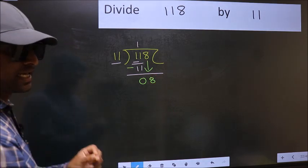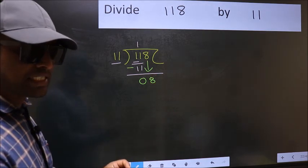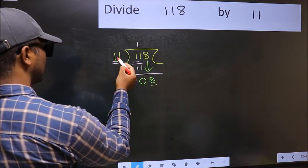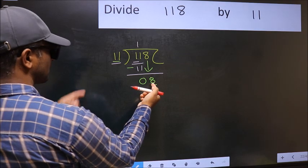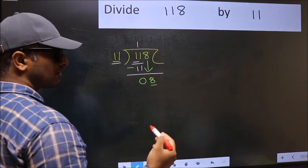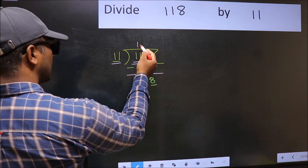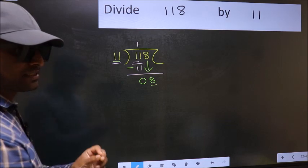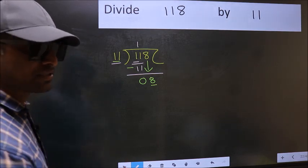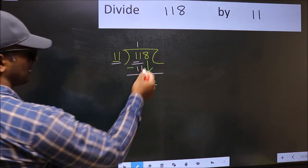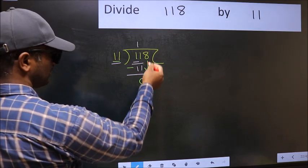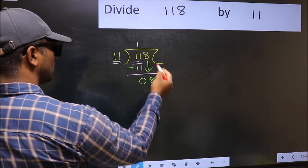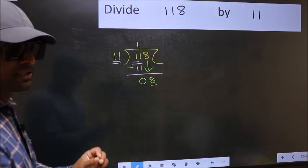After this step, the mistake happens. Here we have 8 and here 11. 8 is smaller than 11. So what many do is they directly put a dot and take 0, which is wrong. Why is it wrong? Because just now you brought this number down, and in the same step you want to put a dot and take 0, which is wrong.